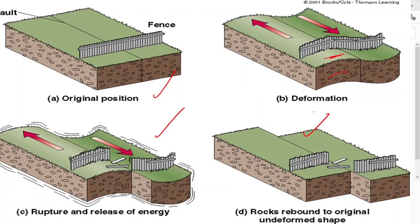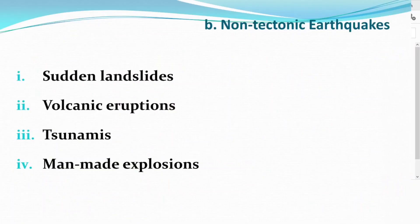The causes of earthquakes include the elastic rebound theory for tectonic earthquakes. Moving on to non-tectonic earthquakes, one cause is volcanic eruptions.